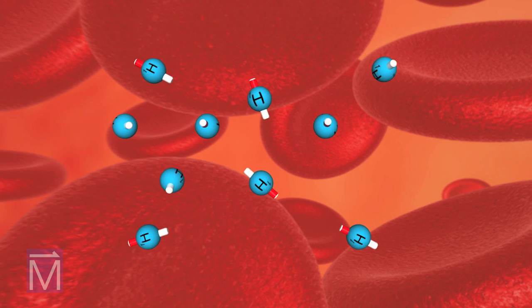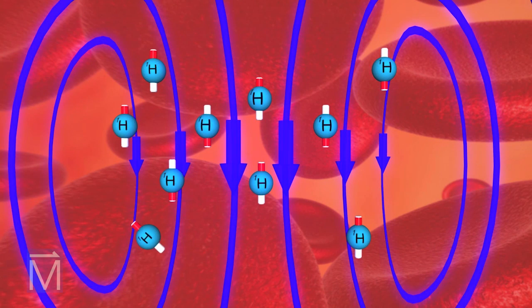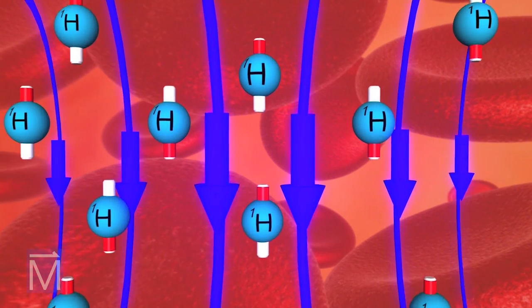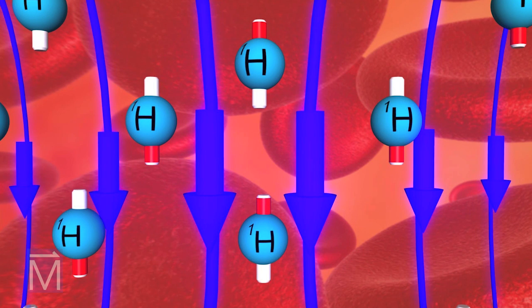Suddenly, the axes of the hydrogen protons realign with the powerful magnetic field and spin, just like a top, at a specific frequency, its resonance frequency, that is a function of the strength of the magnetic field, represented here by blue lines. Half the protons face in the direction of the field, and the other half in the opposite direction.